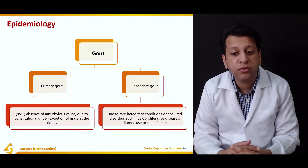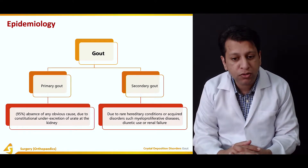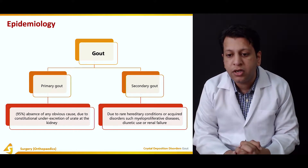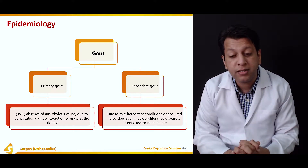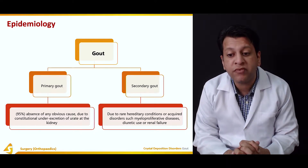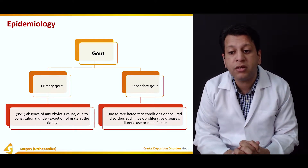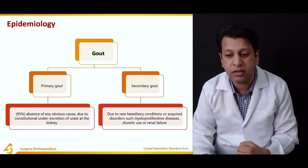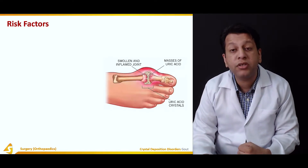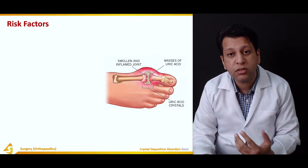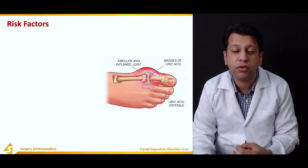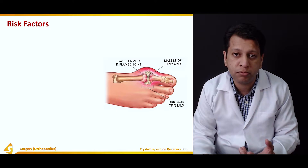Primary gout in 95% of cases is due to constitutional under-excretion by the kidney with no obvious cause, and second is due to rare hereditary conditions or acquired disorders such as myeloproliferative diseases, diuretic use, or renal failure. Coming to the risk factors — why do some patients develop acute symptoms while others remain asymptomatic throughout their life even when uric acid levels are very high?